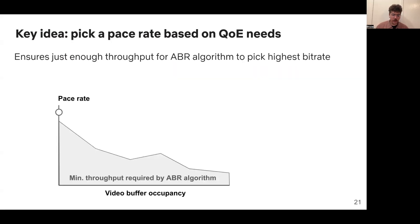So now we have to pick a pace rate. We go into a lot of detail about this in the paper, but let me give you the brief idea here. The idea is to pick a pace rate based on the QoE needs of the video. And so what we do is we take an ABR algorithm, we figure out how much throughput that ABR algorithm needs to pick the highest bitrate, and we pick a pace rate which is just a little bit higher than that throughput. In our experiments, we wind up picking a throughput which is about three and a half times the bitrate of the video when the video buffer is empty, and about two and a half times the bitrate of the video when the video buffer is full.